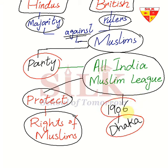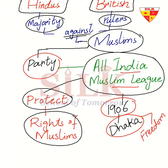Grade 4, now we know a new change. The All India Muslim League was formed in 1906. What was the meaning of this party and what was its purpose? The meaning related to the Hindus and the British.